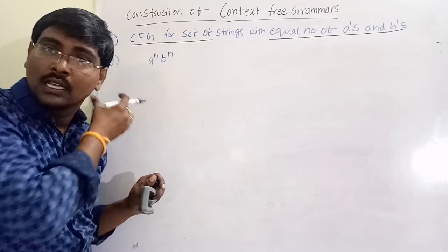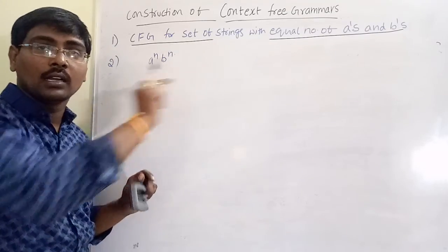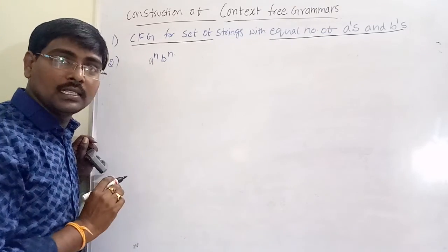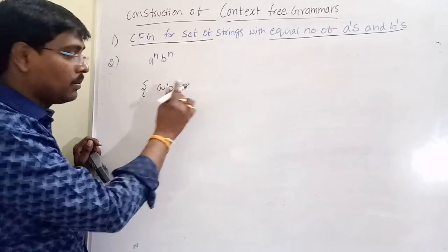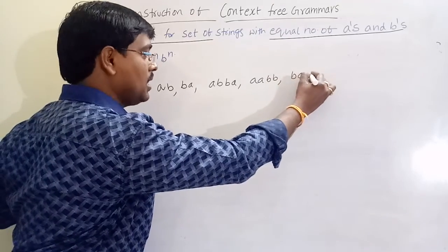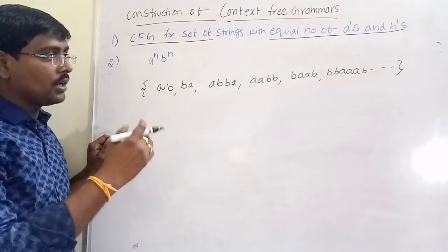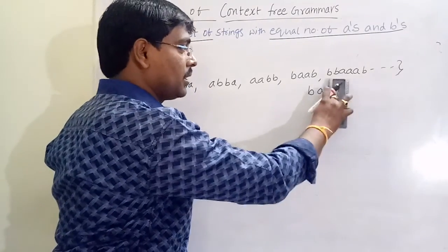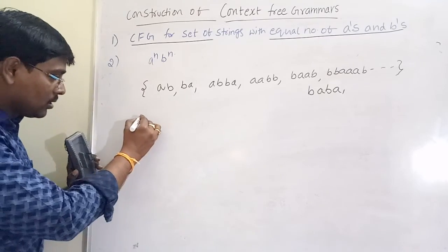The first example: construct a context free grammar for the set of strings with equal number of a's and b's. The strings contain equal numbers of a's and b's with no order — a followed by b, b followed by a, any combination is allowed. Some possible strings: ab, ba, aabb, bbaa, baabba, bbaabb, and so on.